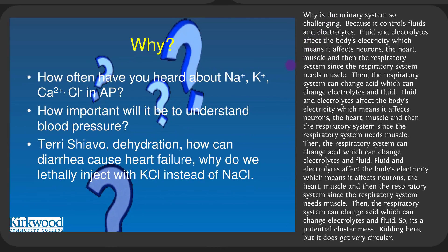Why is the urinary system so challenging? Because it controls fluid and electrolytes. Fluid and electrolytes affect the body's electricity, which means it affects neurons, the heart, muscle, and then the respiratory system since the respiratory system needs muscle. The respiratory system can change acid with CO2, which can change electrolytes and fluid.